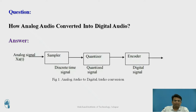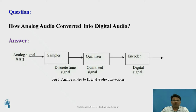There are three processes to convert an analog signal into a digital one: sampling, quantization, and encoding. The sampler accepts the input analog signal and converts it into a discrete time signal. The quantizer rounds off the sampled values to the nearest quantization level. These sampled amplitude values are then converted into digital data or binary bit streams by the encoder.